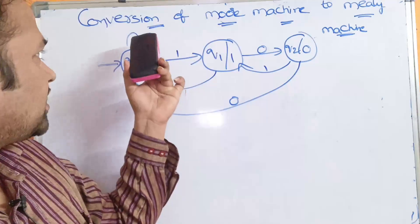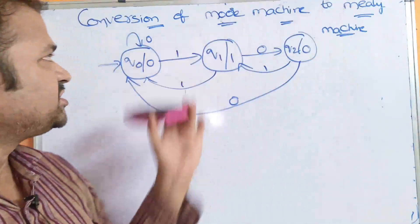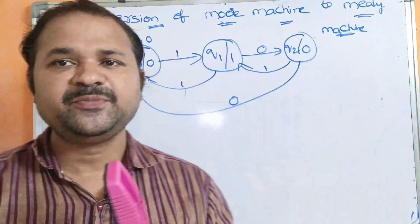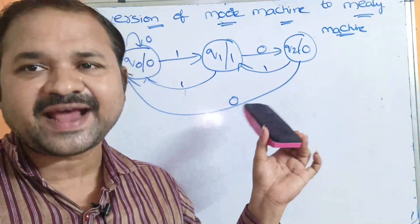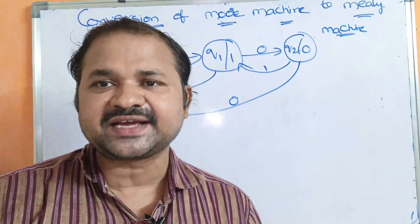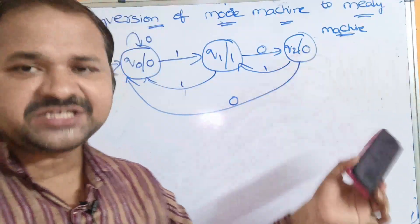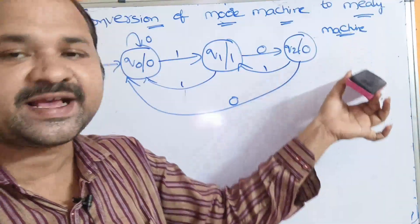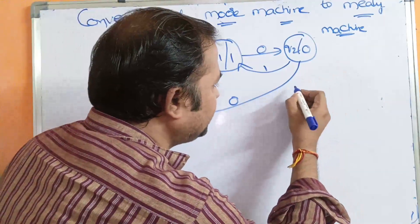Now let us convert a Moore machine to a Mealy machine. The Moore machine is given in the problem. We have to convert this Moore machine to a Mealy machine. In the examination, a transition table or transition diagram may be given. This is the transition diagram. First let us construct the transition table for this diagram, because in the examination a transition table may be given, and we need to directly convert the Moore transition table to the Mealy transition table.